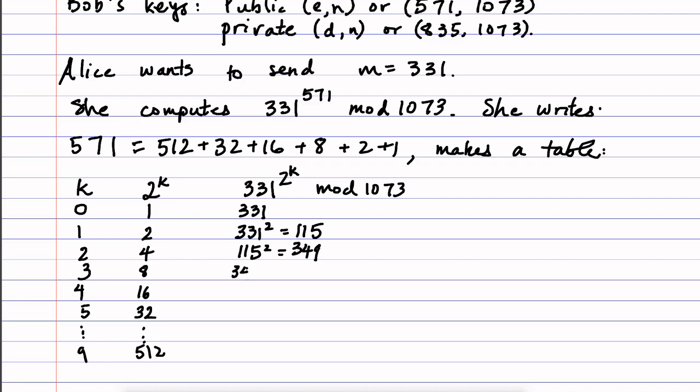And so on, 349 squared mod 1073 is 552. And you'll notice something's going to happen if I keep filling out entries that does make life easier in the sort of very long run. And it's this, so let me just finish another line here. So 784.